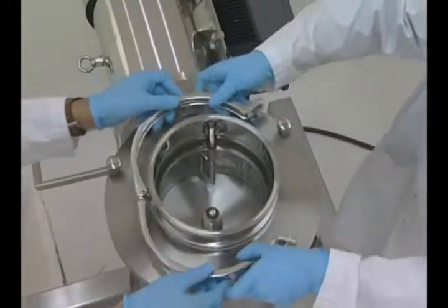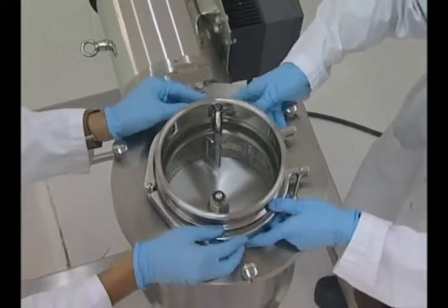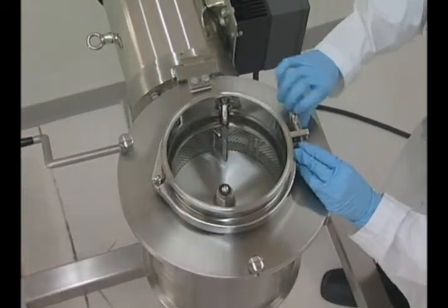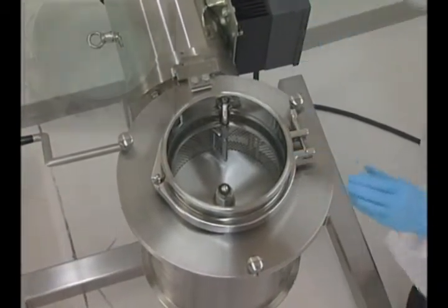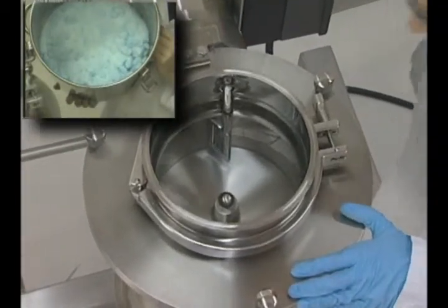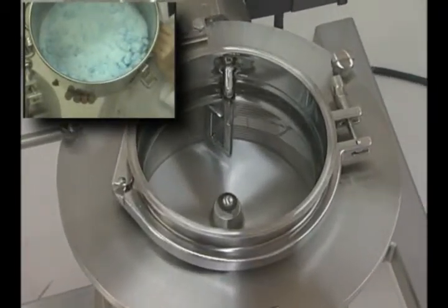The Quadro Sifter is a very efficient de-lumper of agglomerated powders. Lumping is typically caused by particles or powders adhering to one another as a result of exposure to environmental conditions, such as heat, cold, or moisture during shipping or storage.